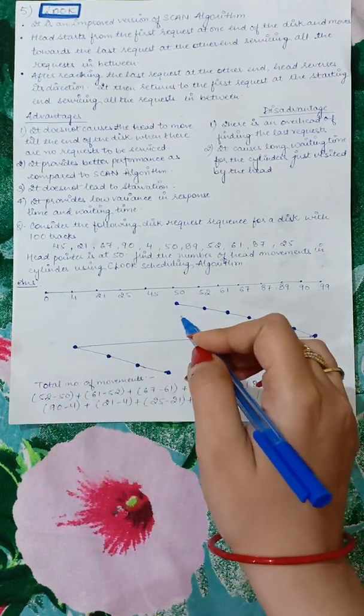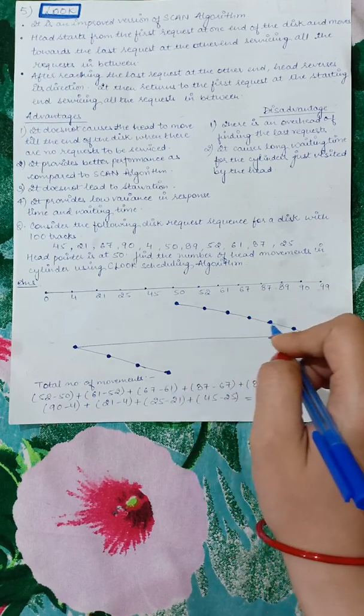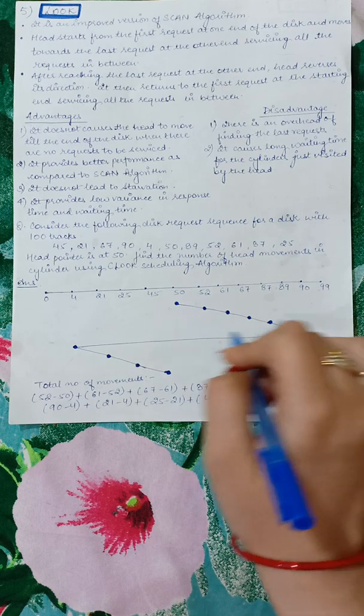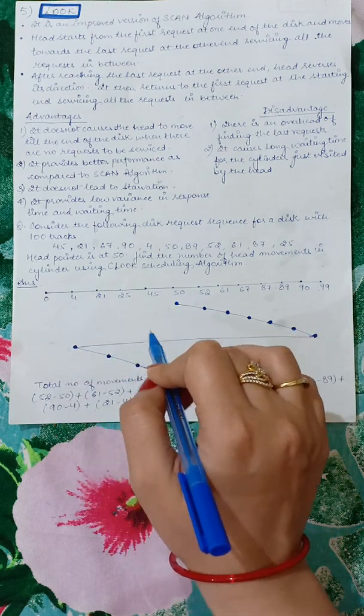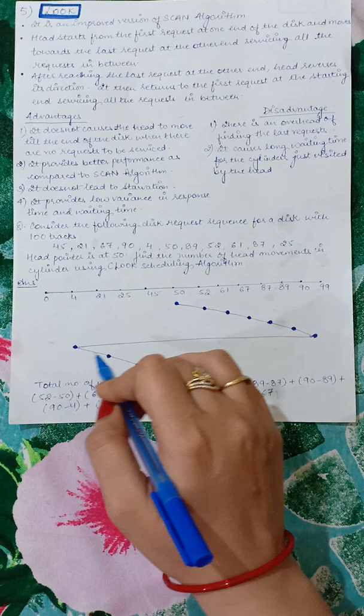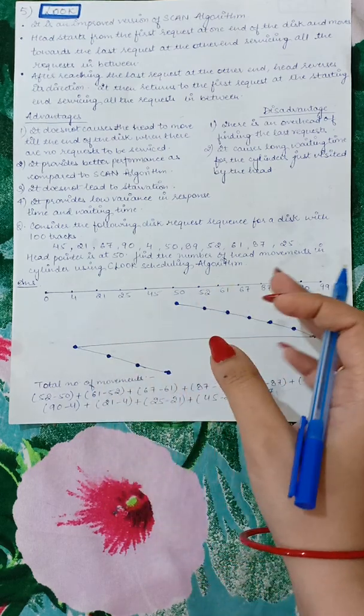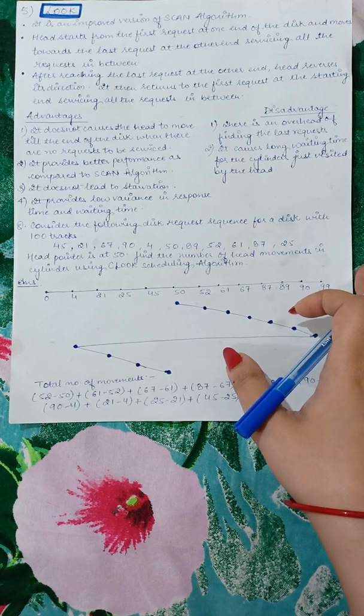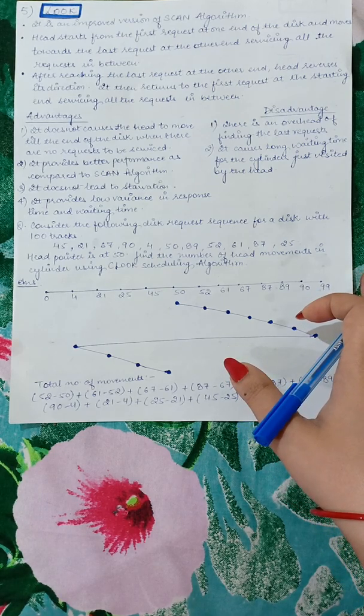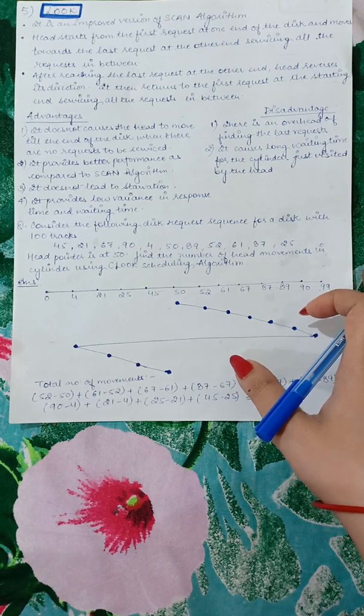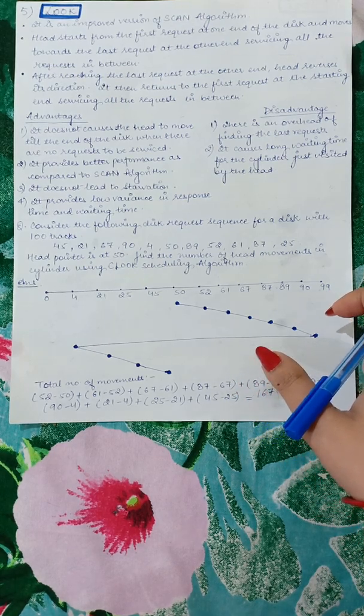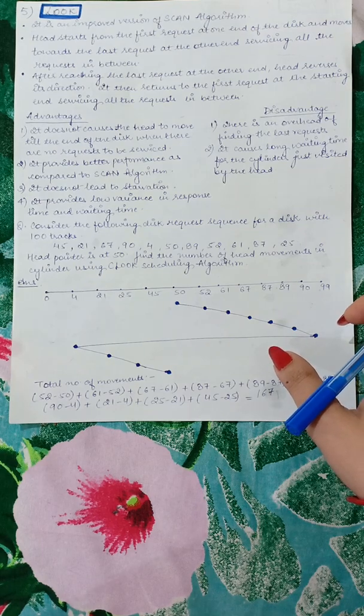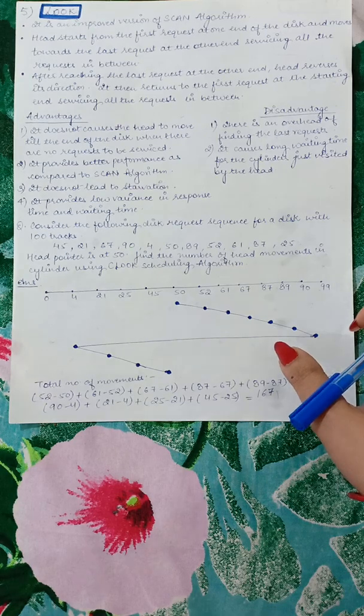If we talk about C-LOOK, the requests will be serviced in one direction. After completing the complete direction, you will go to the last request, reverse the direction, and then move to the first request without fulfilling any requests. Then start fulfilling the requests. This was the concept of disk scheduling algorithms, which are required to order the requests in a proper manner so that the system's efficiency and performance is maintained. These were the few algorithms which are used, and their advantages and disadvantages are very important. Please focus. Thank you.